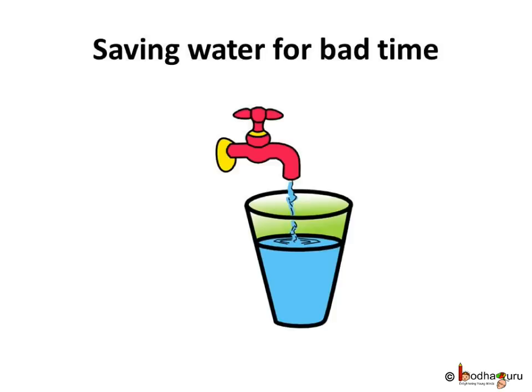Even after using water judiciously, still a lot of water is required as the population is increasing day by day. The rain water supplies water to all the water sources. So, just like your parents save money for bad times, we have to save or conserve rain water for bad times.